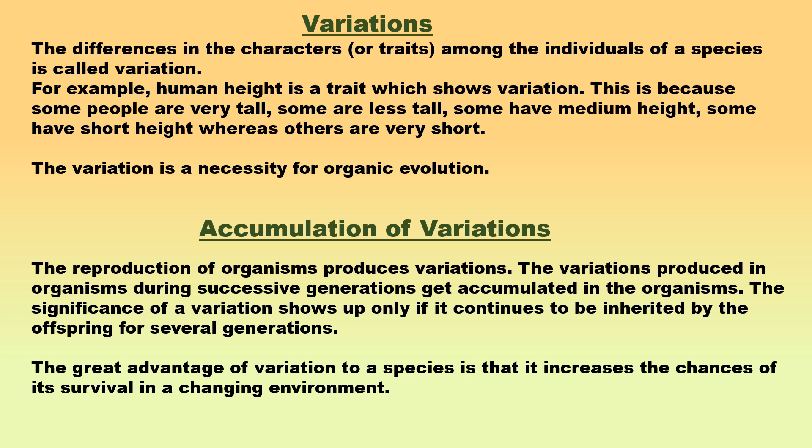These differences are known as variations. From the biological point of view, variation is the occurrence of differences among the individuals of a species. For example, people have different heights. Their complexion, type of hair, color of eyes, shape of nose and shape of chin also show differences. The differences in the characters or traits among the individuals of a species is called variation.